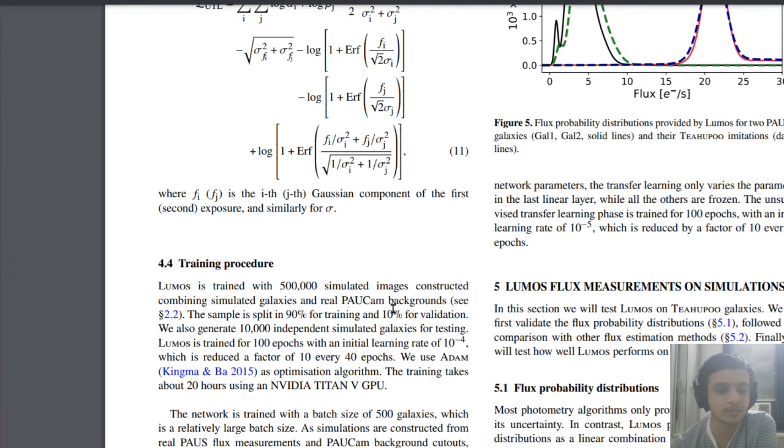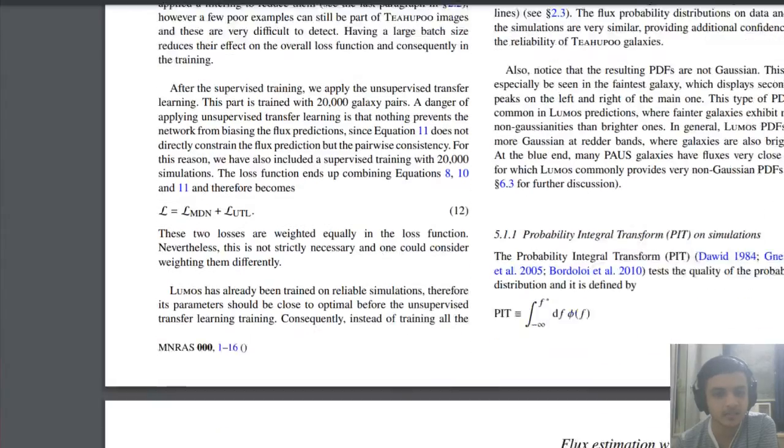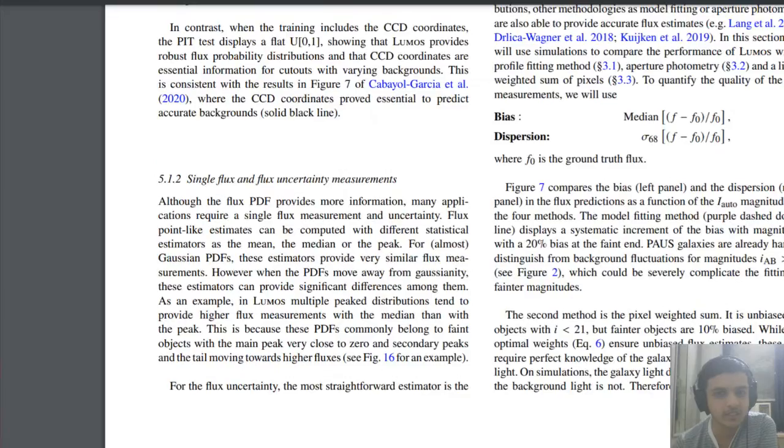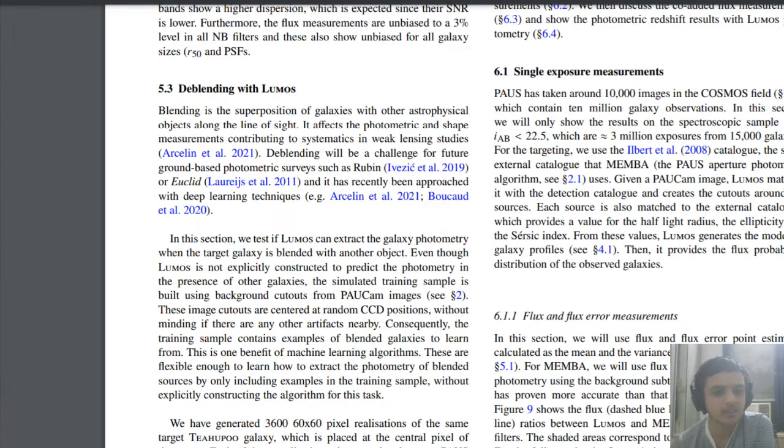They simulated around 500,000 images and this was generated from the T-hoopo simulated data that we saw earlier. They trained it for 40 epochs, learning rate was 10 to the power minus 4. The hardware that they used was NVIDIA GPU, it took about 20 hours to train. They tried the simulated data and the real data, linearized it and fed it to the MDN. There are various ways in which they try to fine-tune the loss function.